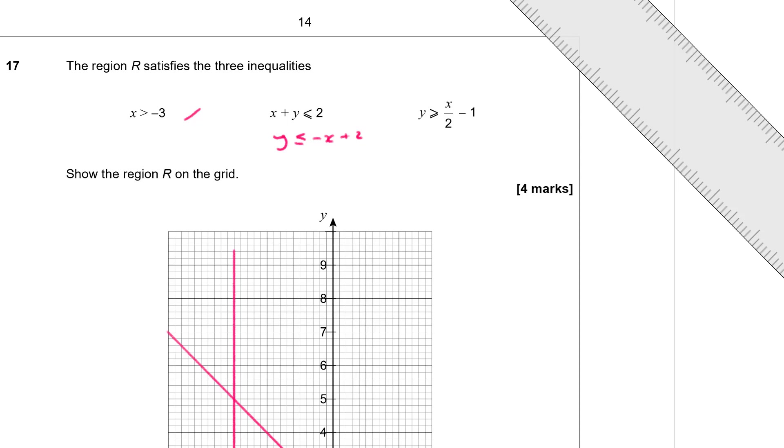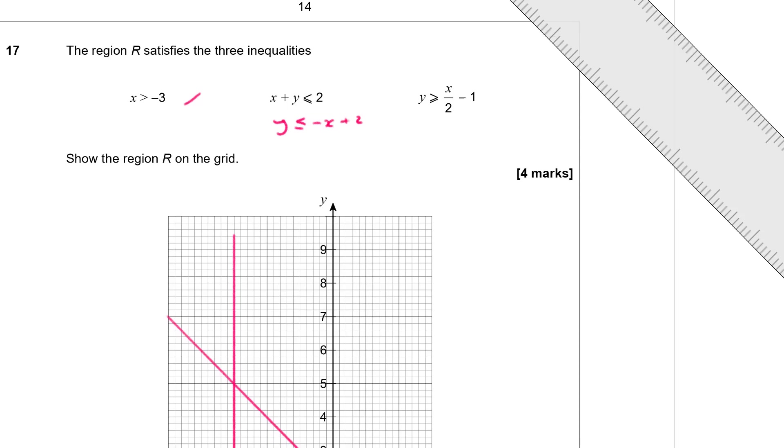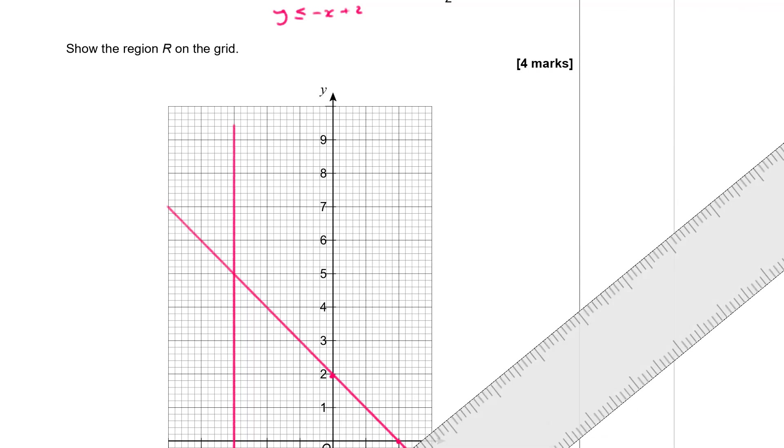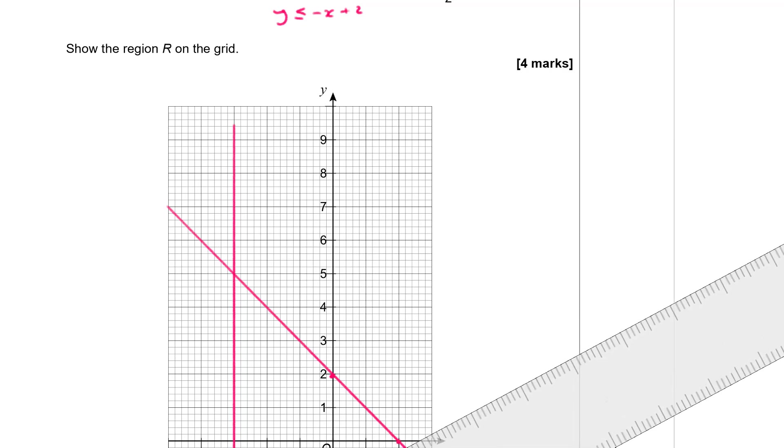So that's my line y is equal to minus x plus 2. And then finally y is greater than or equal to x over 2 minus 1. So that line is going to pass through the y axis at minus 1 and have a gradient of a half. So it goes through minus 1 and has a gradient of a half which means for every 1 unit you go along you're going to go half up. So if I go 2 units along we're going to go 1 unit up. It's going to pass through that point there. So let's put the ruler passing through those two points. So that's my line y is equal to x over 2 minus 1.